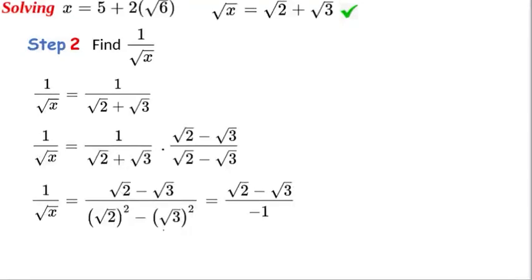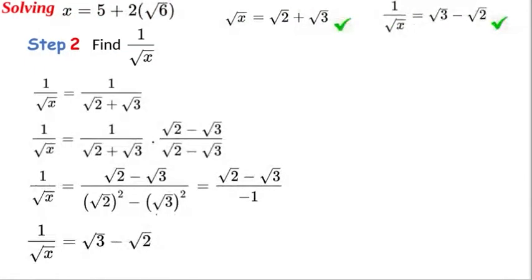To finalize step two, all we need to do is divide by our negative one, and this will change the signs of the numerators. Therefore 1/√x = √3 - √2.